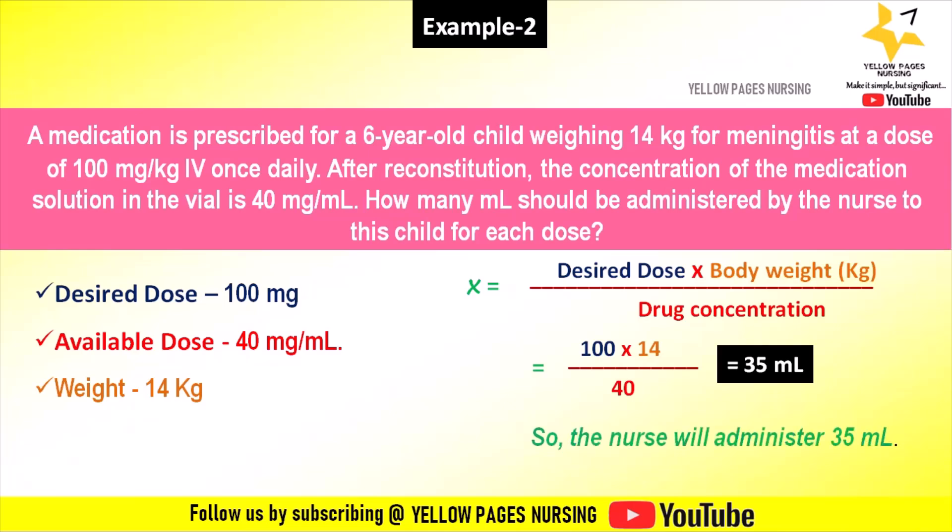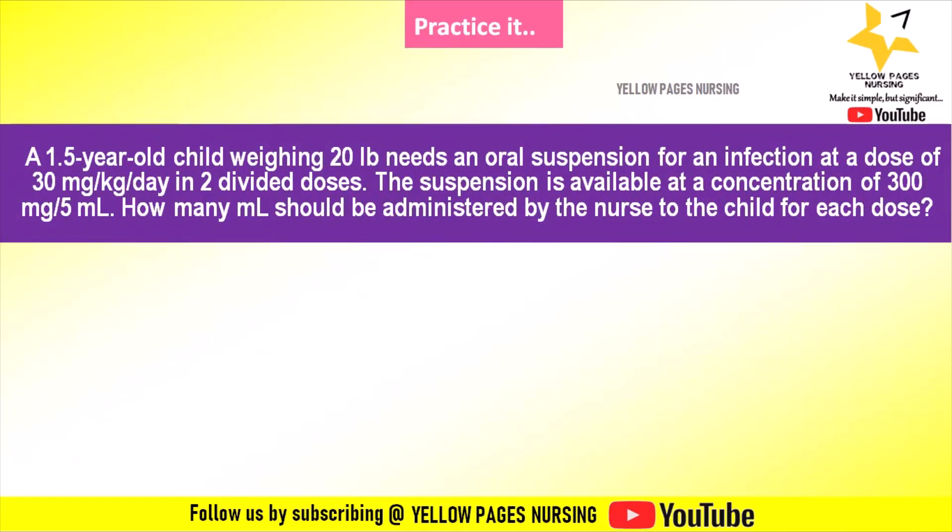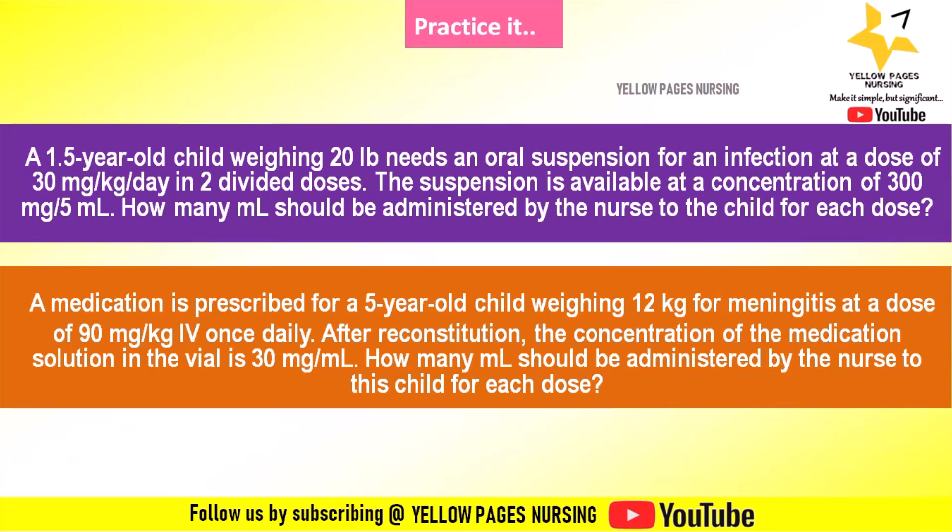Here are a few examples for your practice. First: a 1.5-year-old child weighing 20 lb needs an oral suspension at a dose of 30 mg per kg per day in two divided doses; the suspension is 300 mg per 5 ml — how many ml per dose? Second: a medication for a 5-year-old weighing 12 kg for meningitis at 90 mg per kg IV once daily; concentration is 30 mg per ml — how many ml per dose?